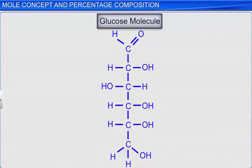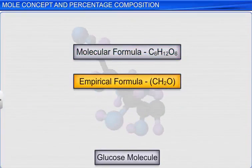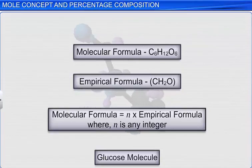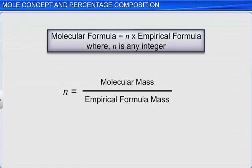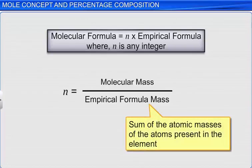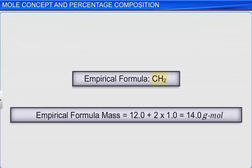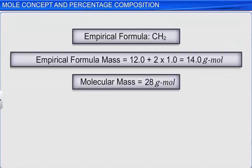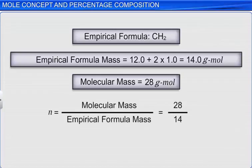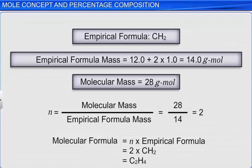The molecular formula of a compound is an integral multiple of the empirical formula, as shown by the equation. The value of N can be obtained by dividing the molecular mass by the empirical formula mass. The empirical formula mass is the sum of the atomic masses of the atoms present in the empirical formula. For example, for a compound CH₂, the empirical formula mass is the sum of atomic masses of one carbon and two hydrogen atoms, which is 14 g/mol. If the molecular mass of the compound is 28 g/mol, then 28 divided by 14 gives N = 2. Multiplying 2 by the empirical formula gives the molecular formula C₂H₄.